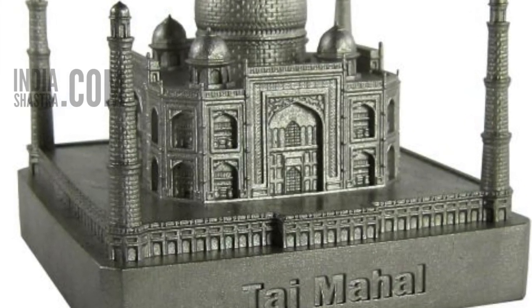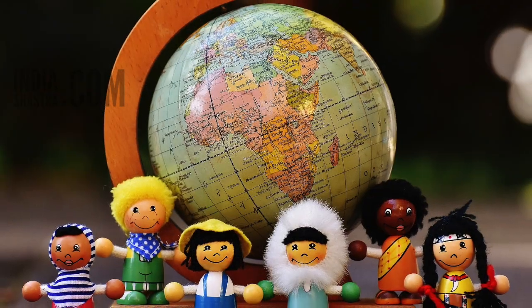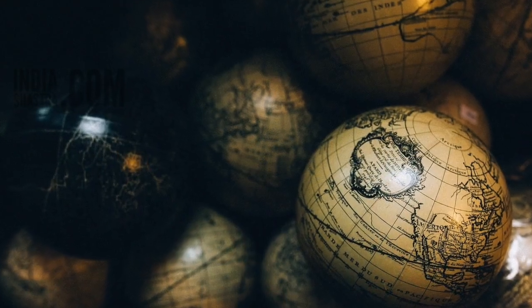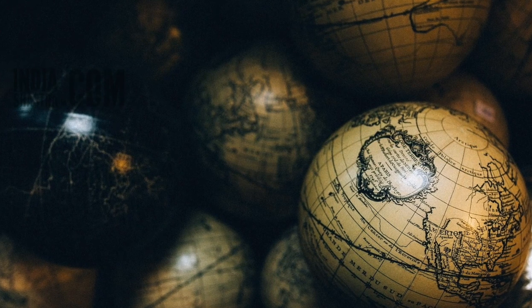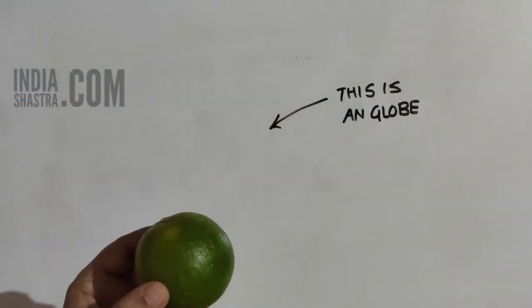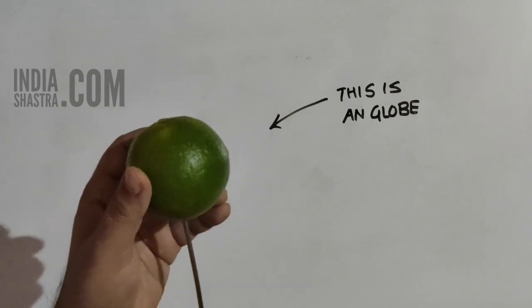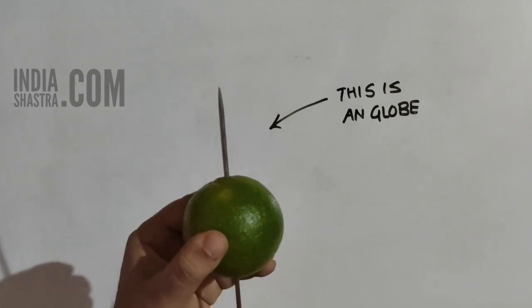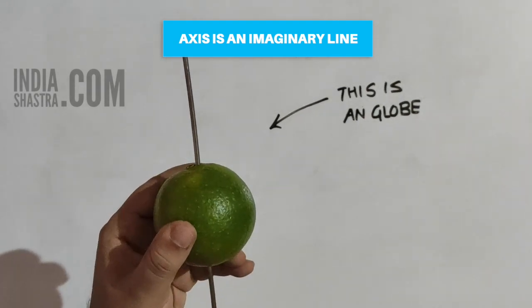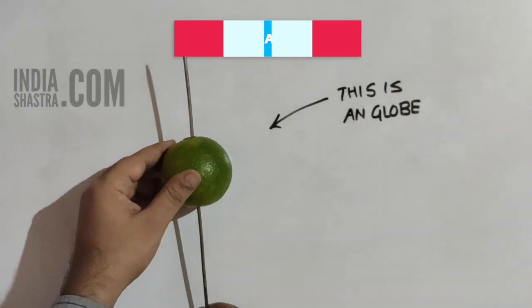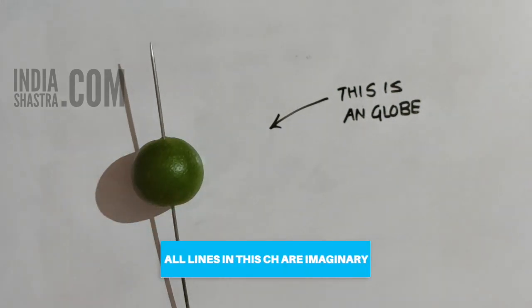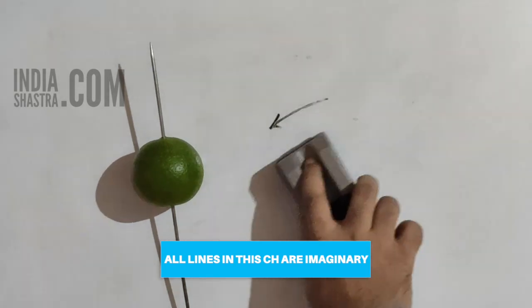Globe is the miniature model of the big Earth. Now globe comes in different sizes and shapes. Imagine this is a globe. When I fix a needle through this, this needle is an axis. Axis is an imaginary line. The lines that we are going to discuss in this chapter are imaginary lines.